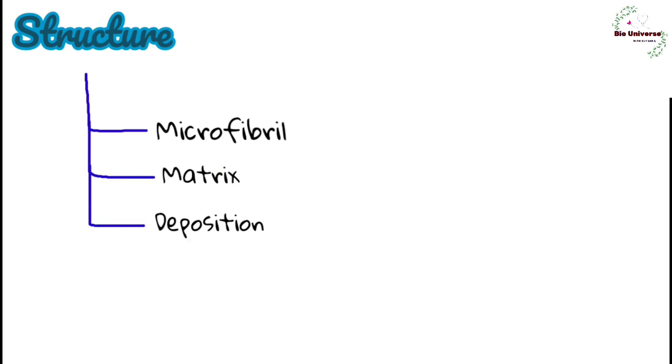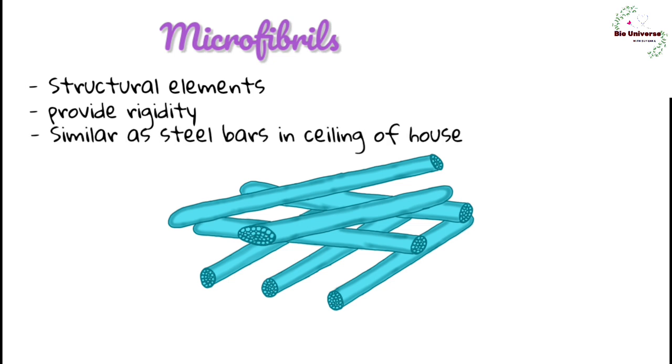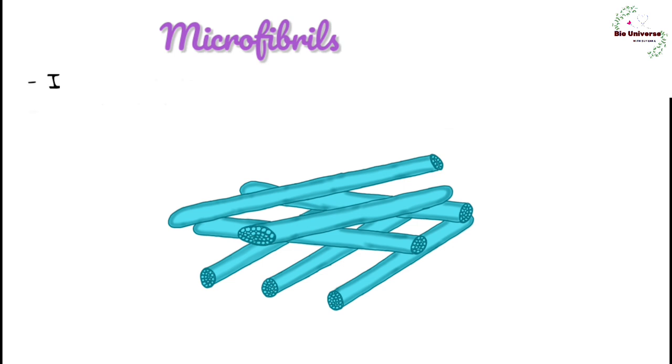Structure of cell wall. Cell wall consists of three parts: Microfibrils, matrix, and depositions. Microfibrils are the structural elements of cell wall. They provide rigidity to cell wall just as steel bars and mesh do with reinforced concrete used in ceilings.